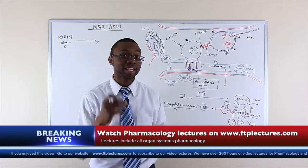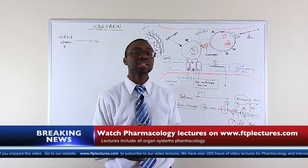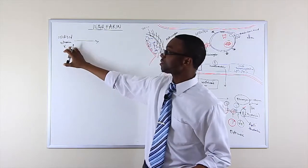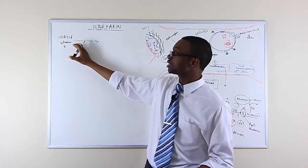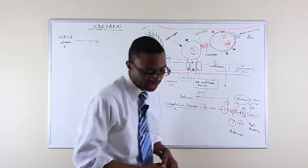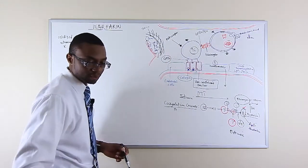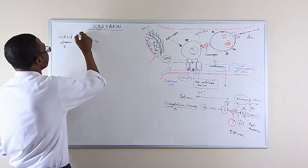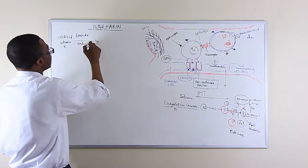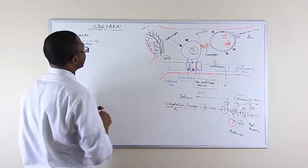On the boards, if they want to get you, they will ask you which of the following cofactors is not made in the liver and it's factor 8 because factor 8 is married to von Willebrand factor. So, oxidized vitamin K is actually converted and activated into reduced form by epoxide reductase and then we have a reduced form of vitamin K.